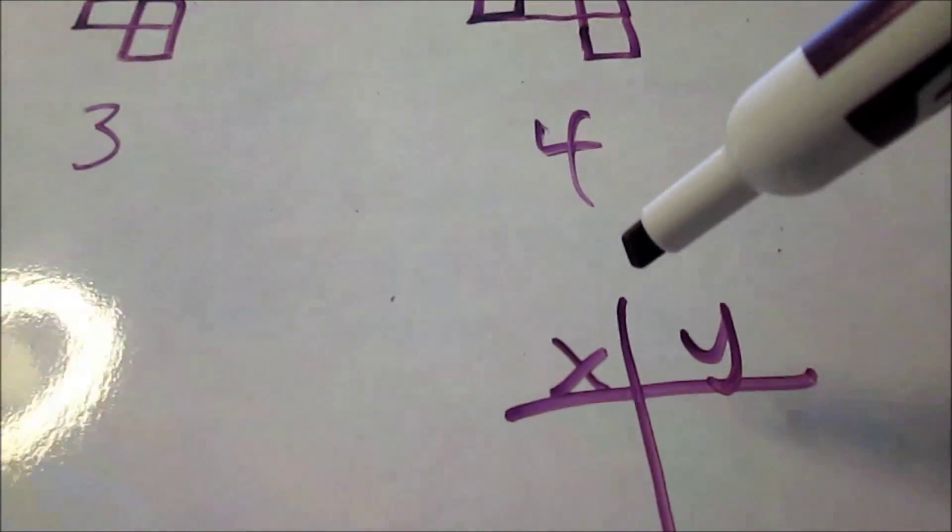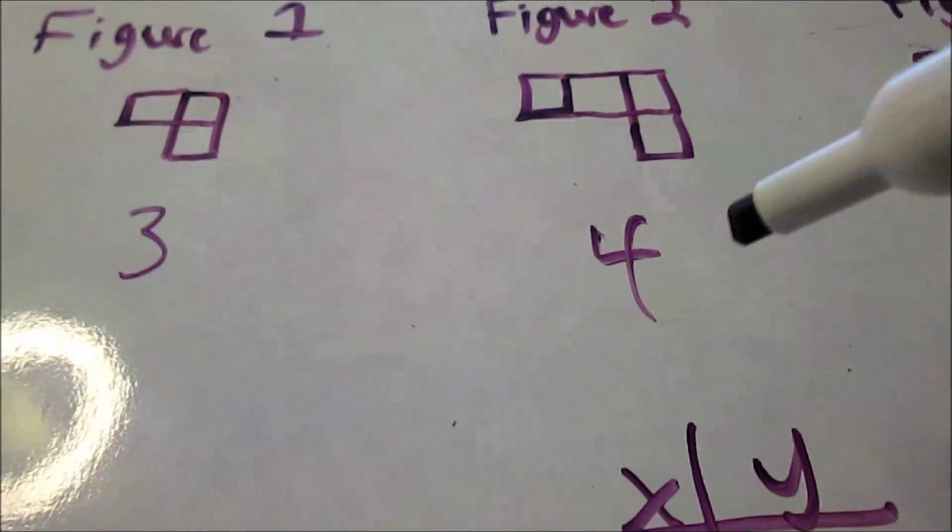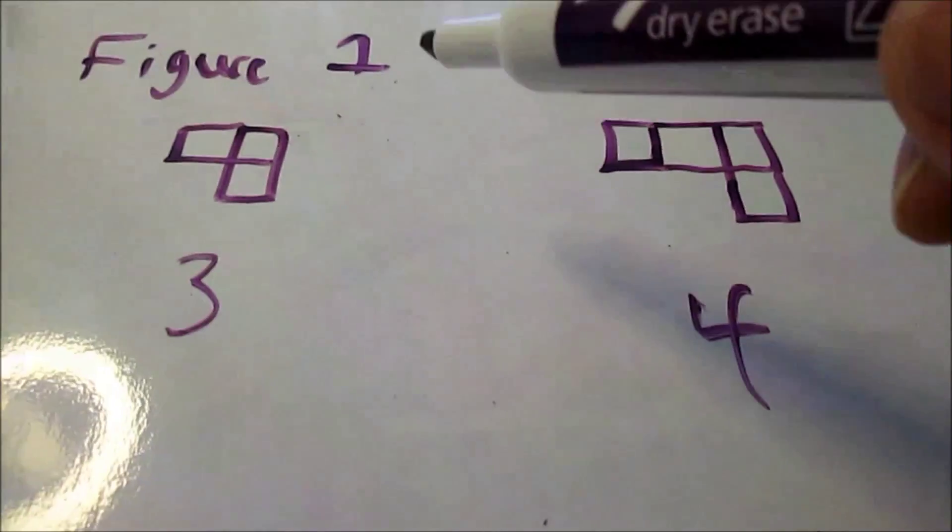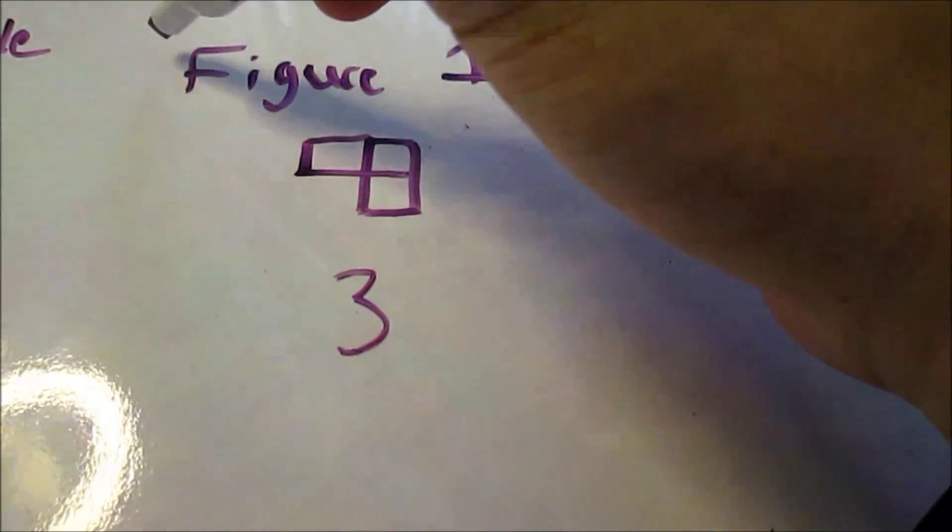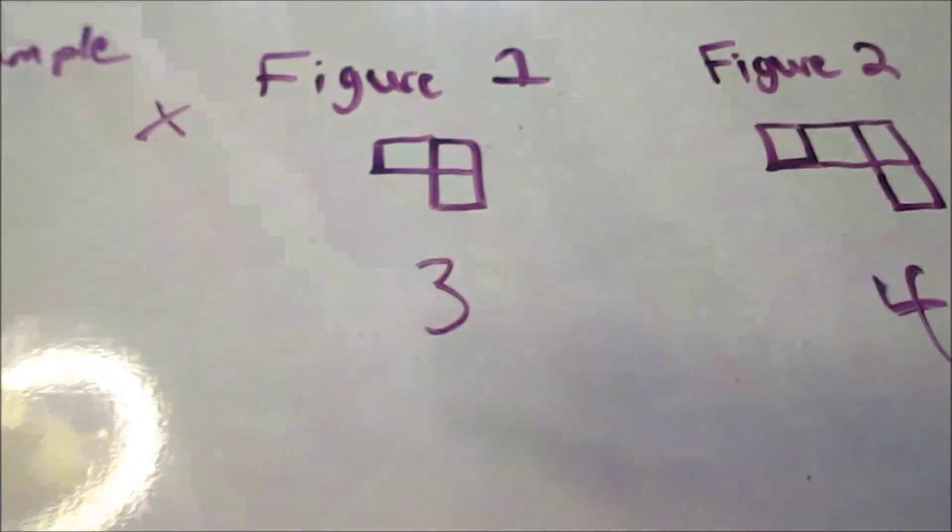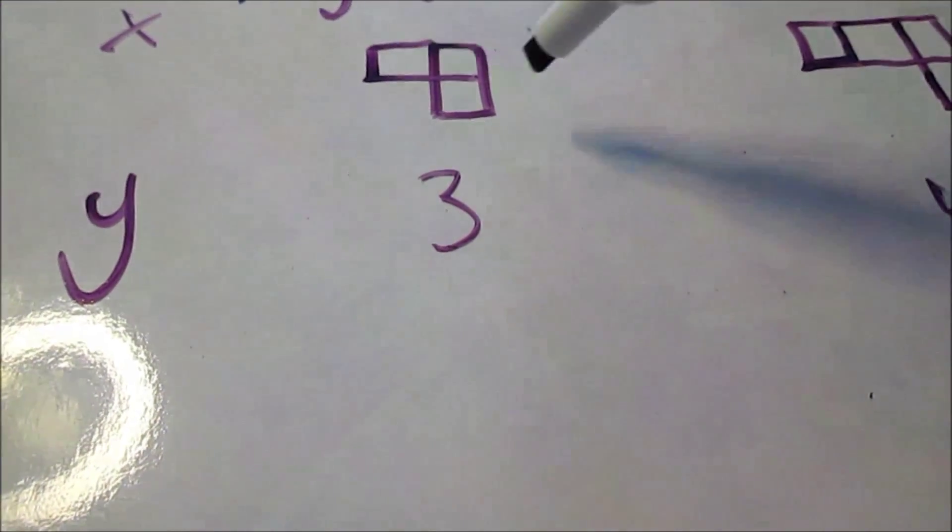But x and y will be useful for transitioning later to linear equations. So figure one, I'll call that x1. I'll write x up here, so I know x is figure number. And down here I'll write y, so I know y is the number of blocks.